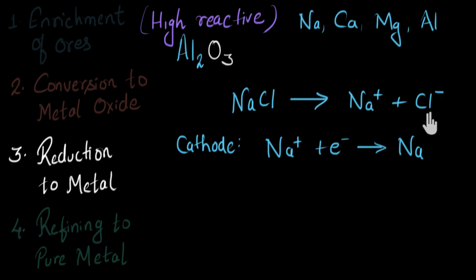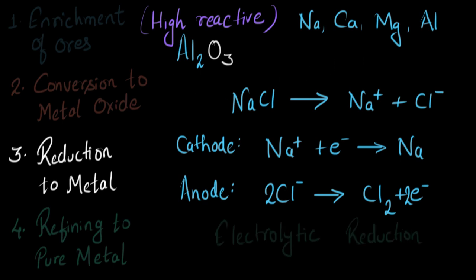Now the chlorine minus ion, they will get attracted towards the positive electrode called the anode. And over here, chlorine ions, they are going to lose their extra electron and become chlorine atom. But chlorine atoms are not stable. So basically, there are two chlorine ions and they both together lose their electrons and become chlorine molecules, Cl2. And we get two electrons over here. So to reduce the compounds of high reactive metals, we use electricity. And that's why this process is called electrolytic reduction.